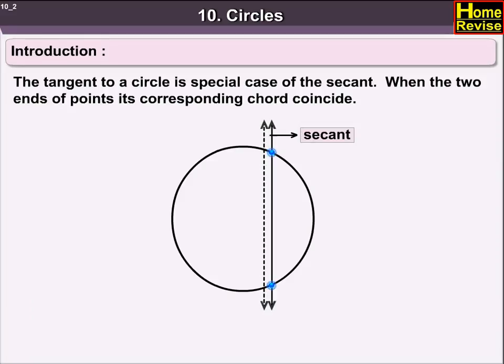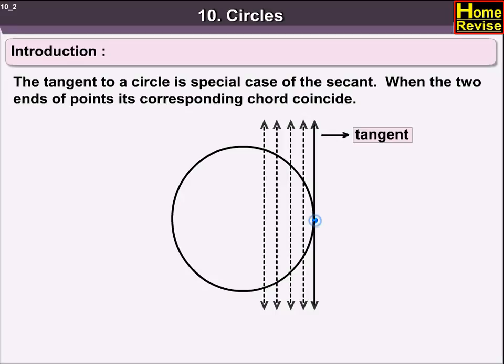The tangent to a circle is a special case of the secant, when the two ends of points of its corresponding chord coincide.